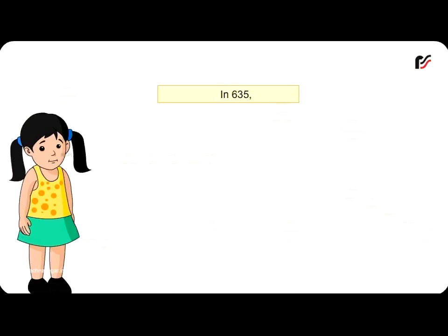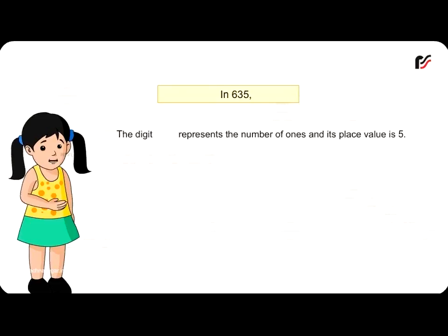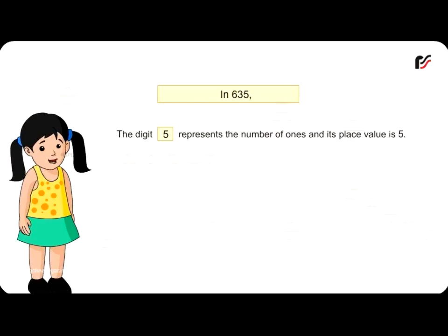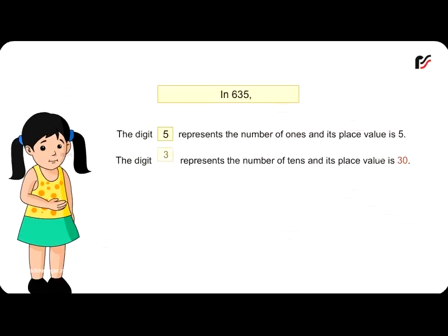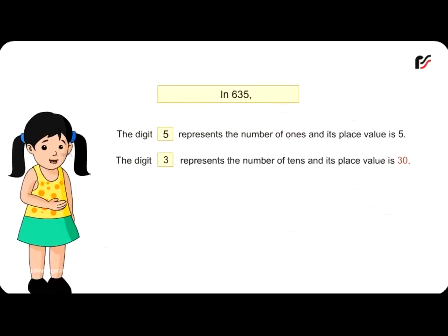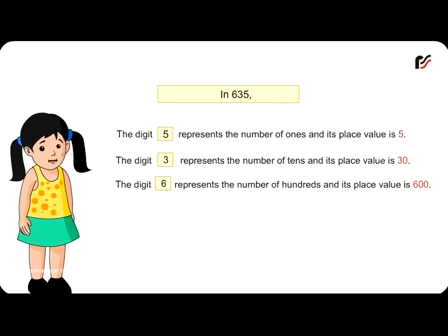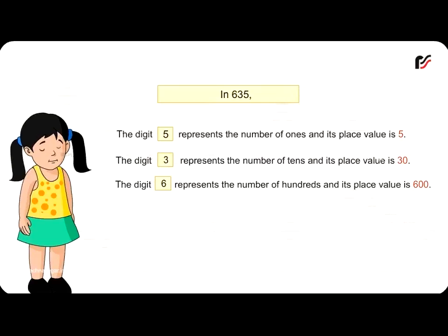In 635, the digit 5 represents the number of ones, and its place value is five. The digit 3 represents the number of tens, and its place value is thirty. The digit 6 represents the number of hundreds, and its place value is six hundred.